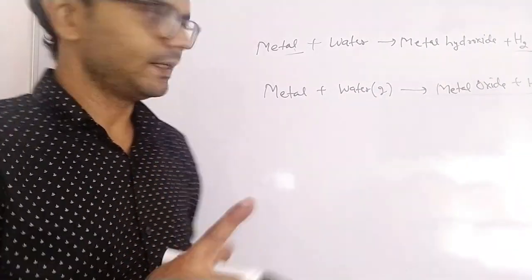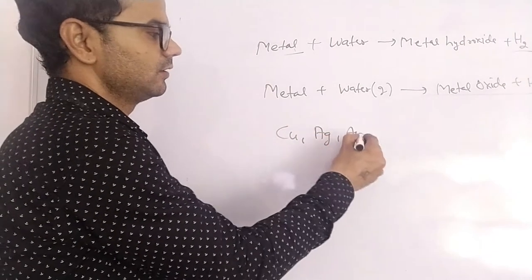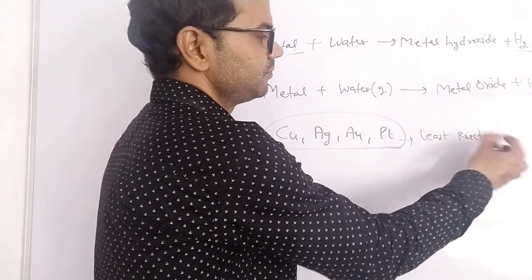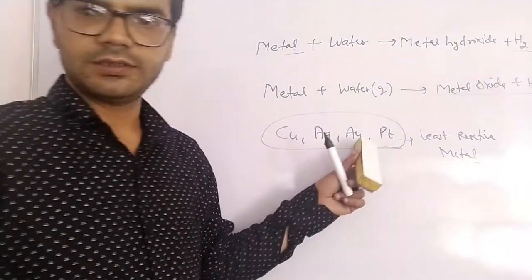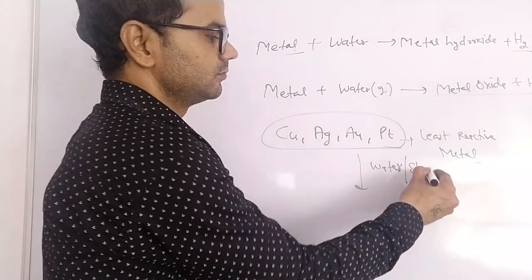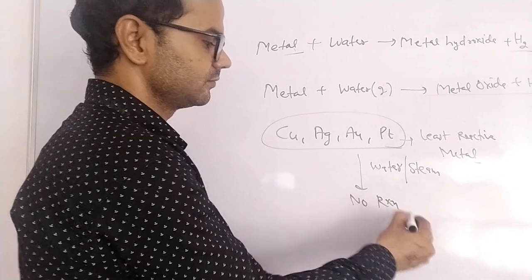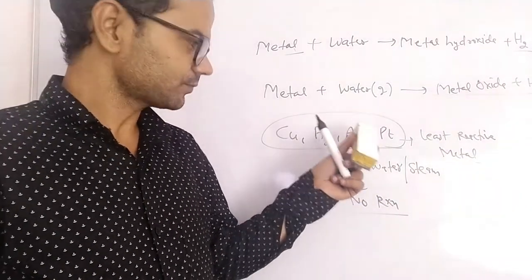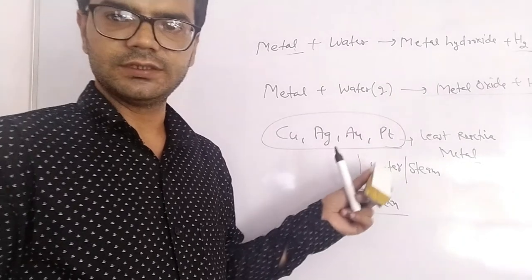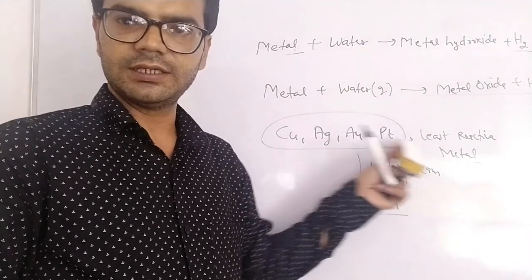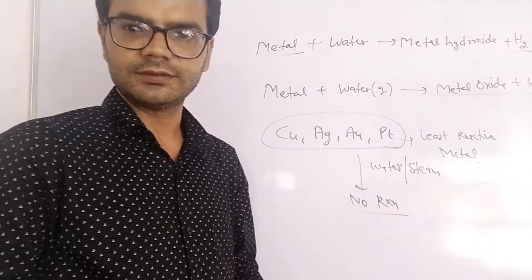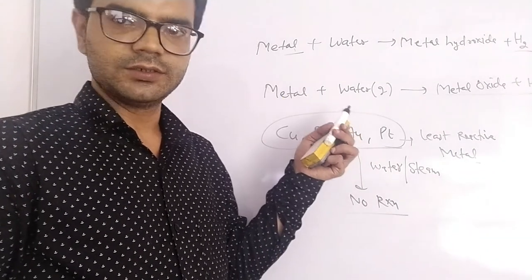One important point: metals like copper, silver, gold, and platinum — the least reactive metals — never react with water. Jewellery is made of silver and gold because of their inert nature with water. These metals never react with water due to their least reactivity; they are chemically stable. This concludes the second property — the reaction of metals with water. In the next segment, we will cover more properties.